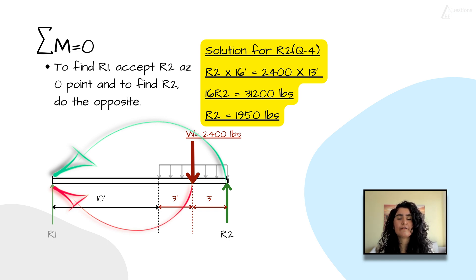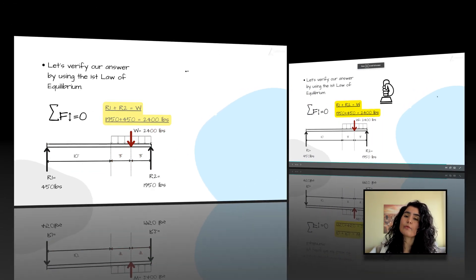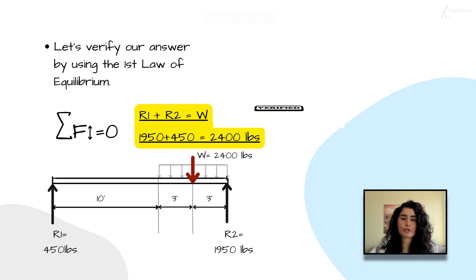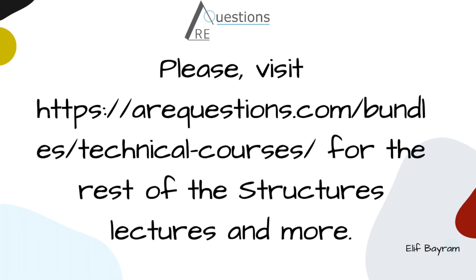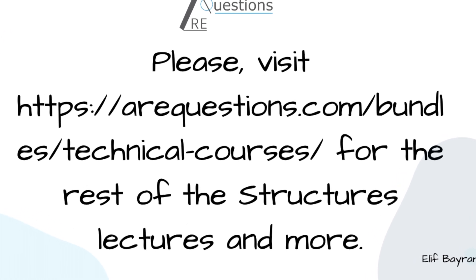Let's verify the answers here. What should R1 plus R2 be? It should be equal to W, right? So 1,950 plus 450 should be equal to 2,400. I hope you enjoyed the videos, see you at the next video.